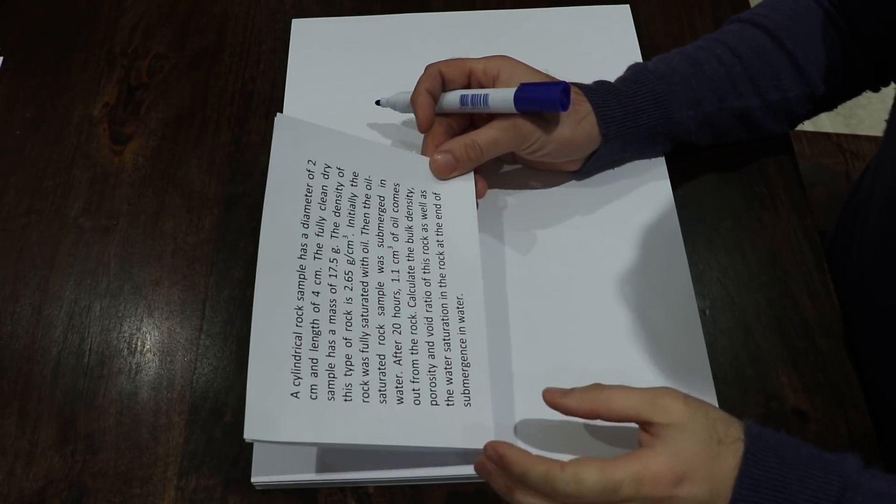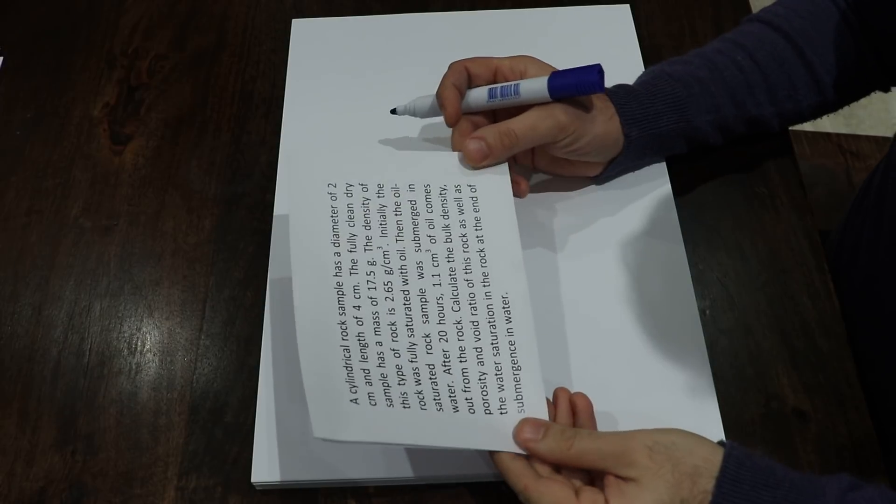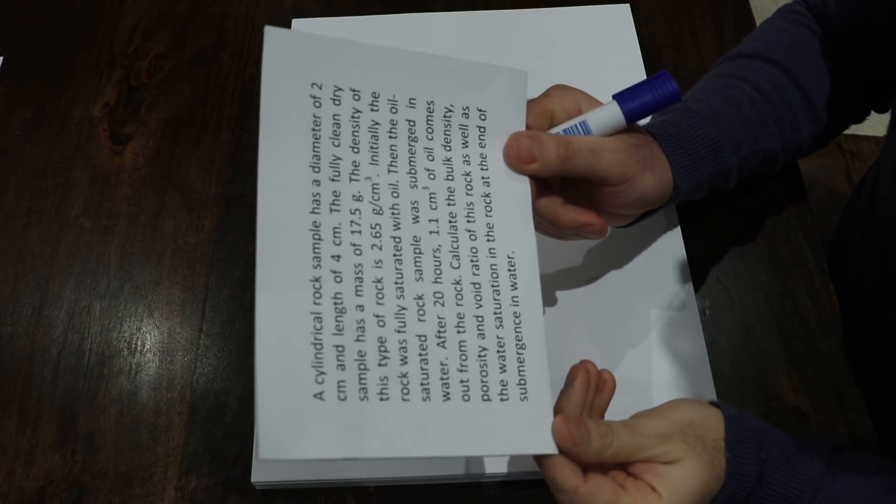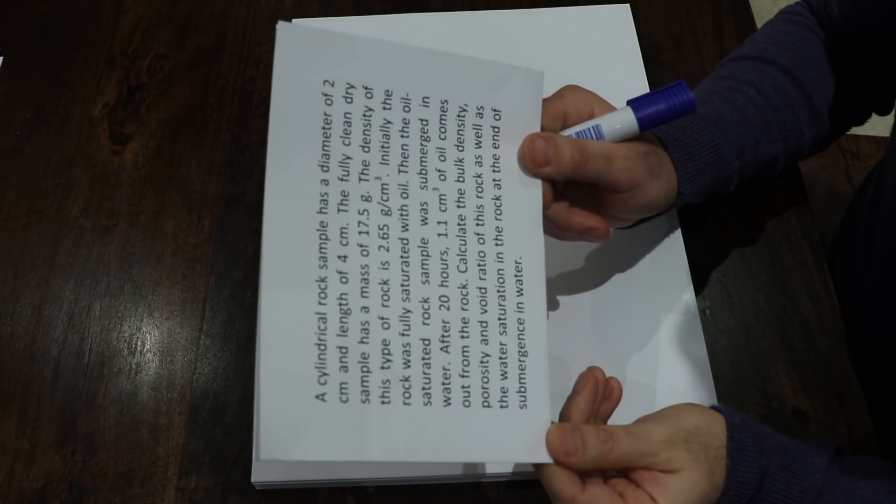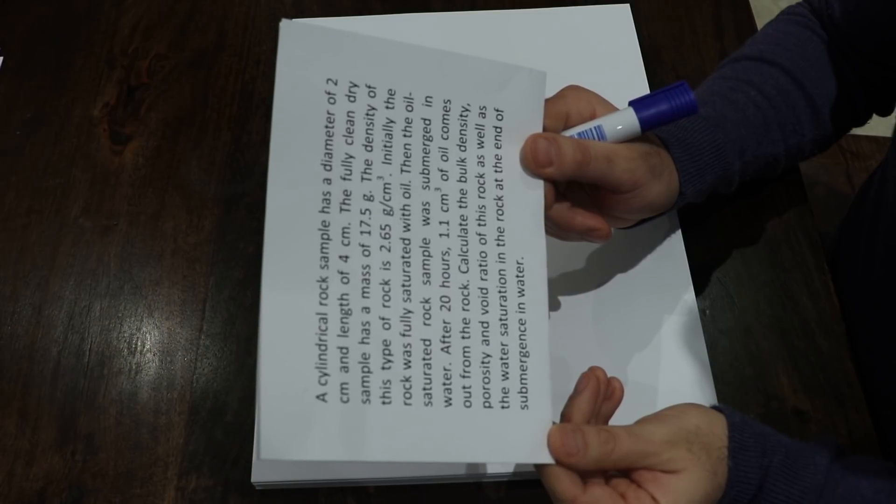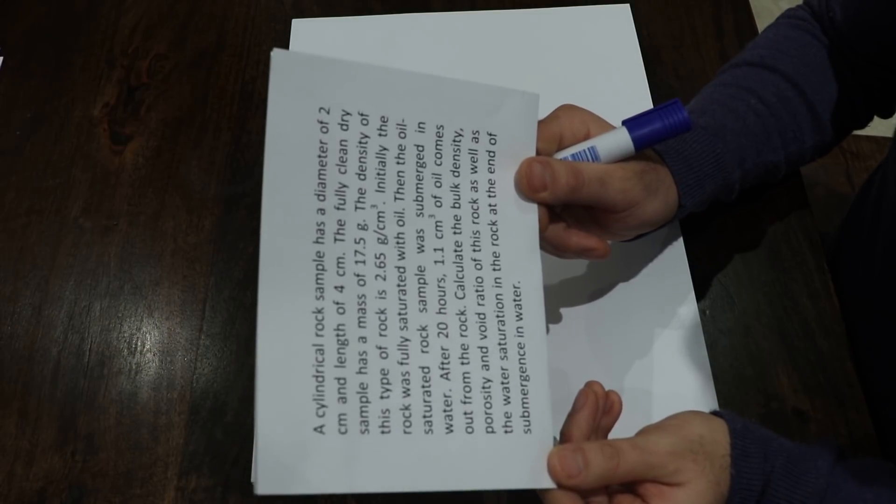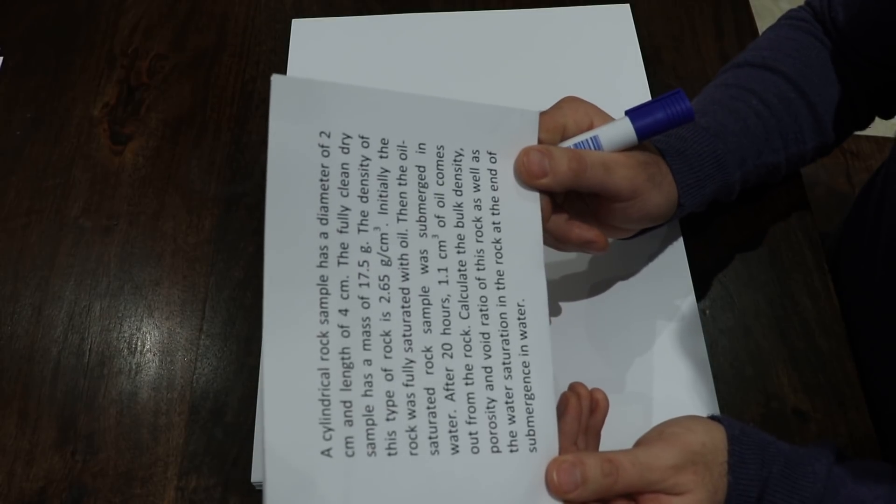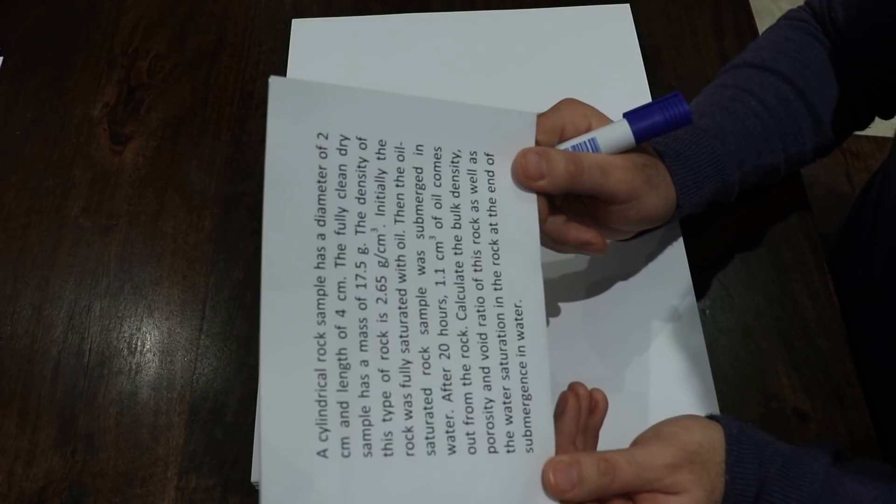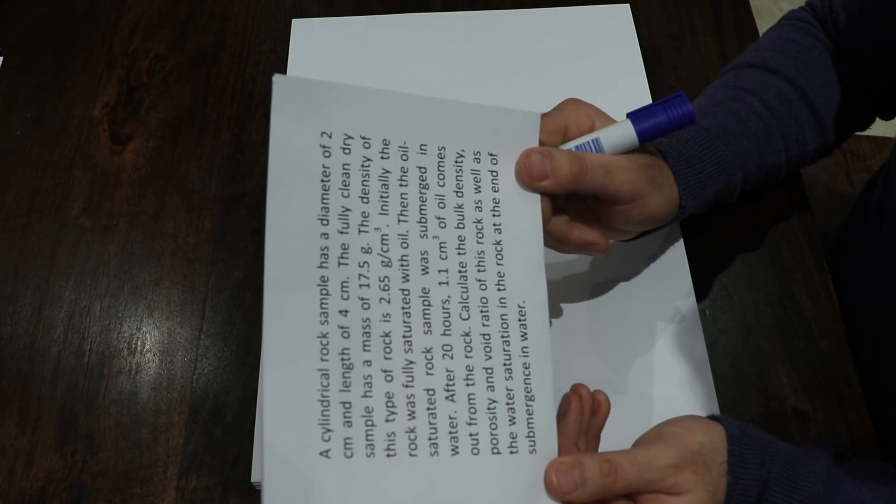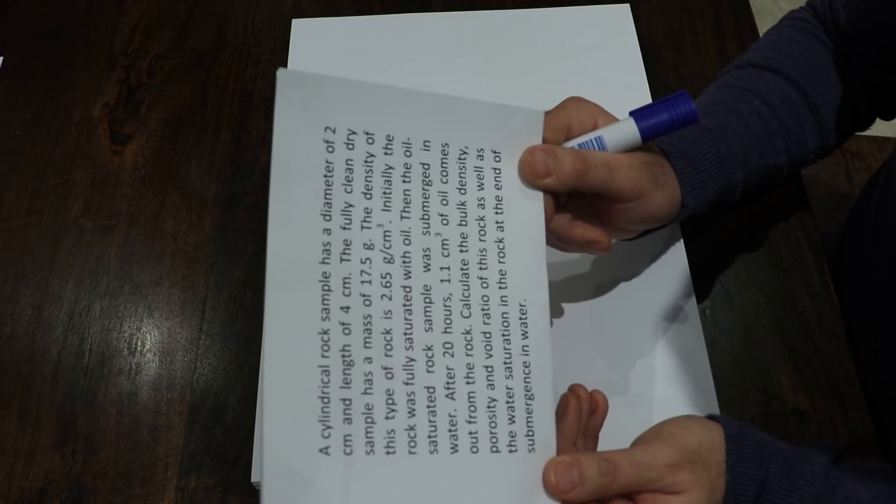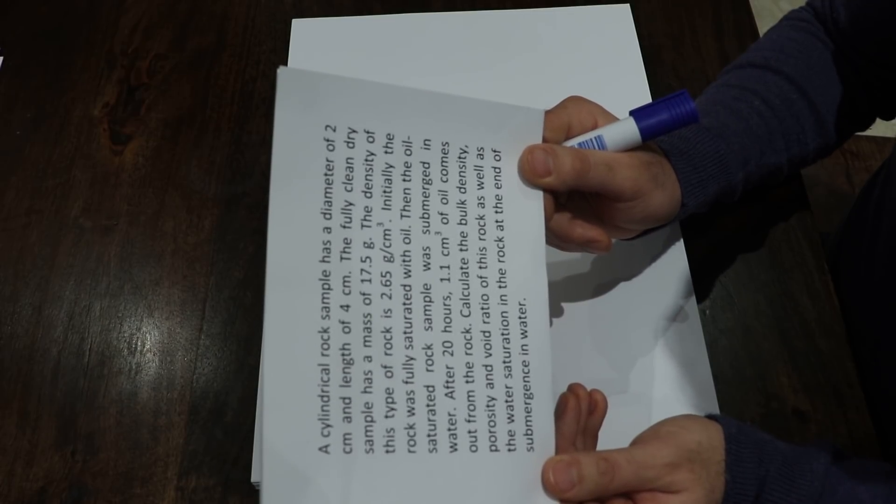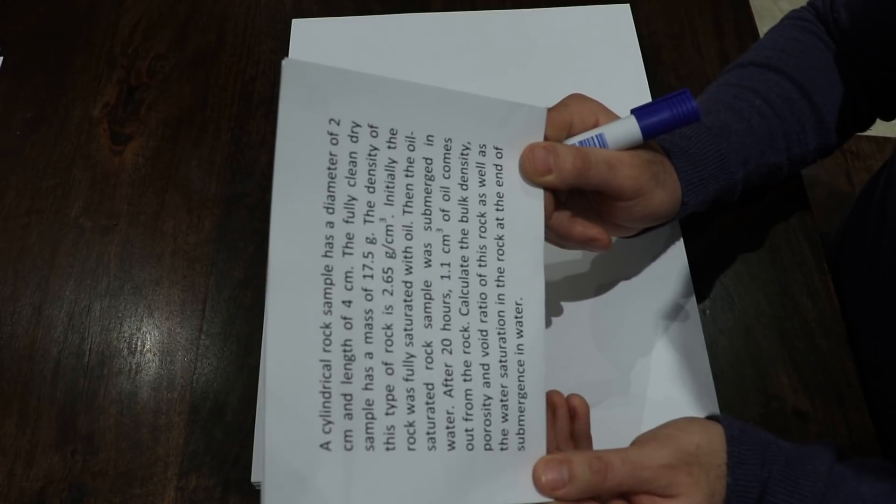Hello, this question is about calculating some basic properties of porous media. A cylindrical rock sample has a diameter of 2 cm and length of 4 cm. The fully clean dry sample has a mass of 17.5 grams. The density of this type of rock is 2.65 grams per cubic centimeter. Initially the rock was fully saturated with oil, then the oil saturated rock sample was submerged in water. After 20 hours, 1.1 cubic centimeter of oil comes out from the rock. Calculate the bulk density, porosity and void ratio of this rock as well as the water saturation in the rock at the end of submergence in water.